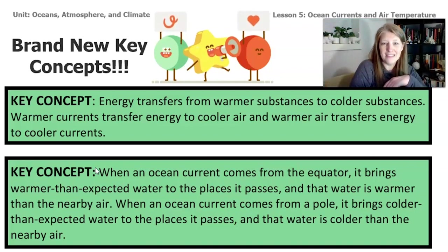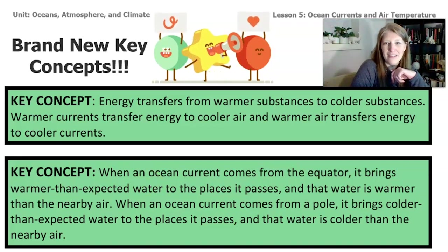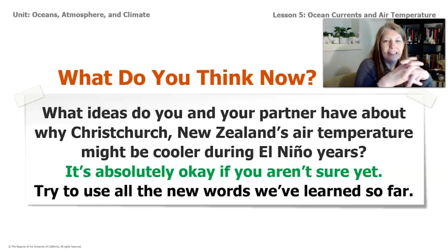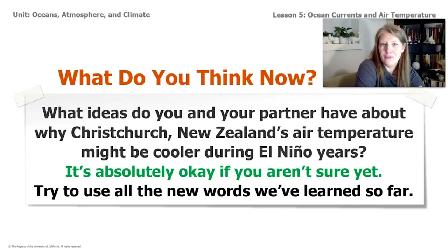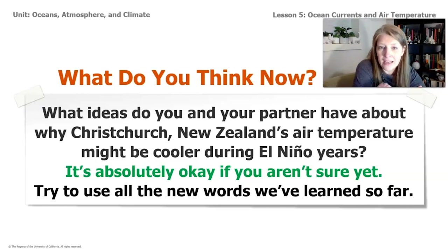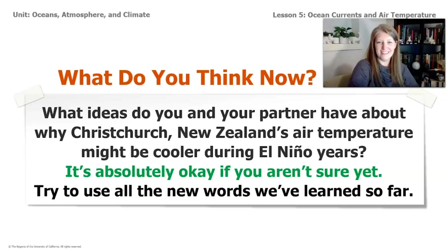Congratulations on these new key concepts! Here's a little challenge before lesson six: think about — or discuss with a partner — why Christchurch, New Zealand's air temperature might be cooler during El Niño years. We know what it's like during normal years and we've seen the pictures of the currents. Try to use all the new vocabulary words we've learned so far — I think as you use those words you'll be able to develop your ideas. Be ready with your ideas before lesson six. See you next time!